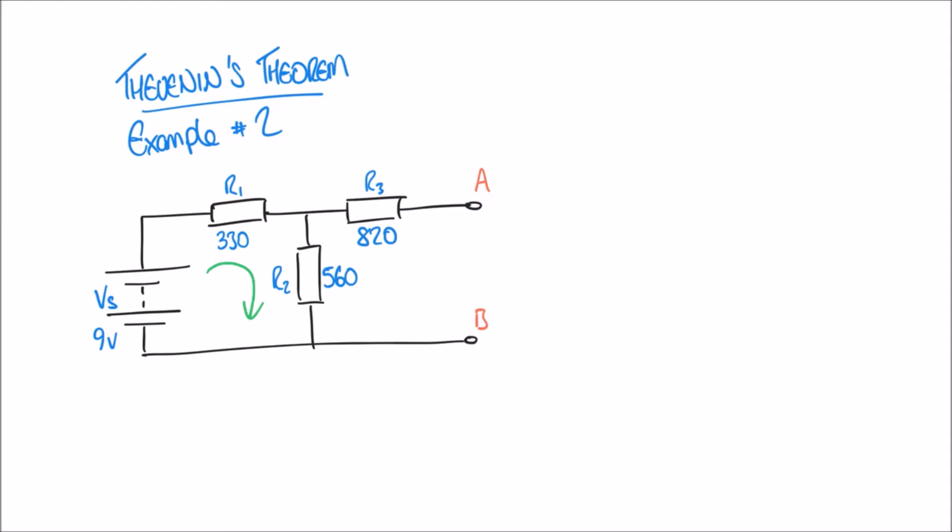R3 doesn't have a current travelling through it because it's open circuit. Terminal A isn't connected to anything at the moment, so current is not going to flow through R3. If current doesn't flow through R3, the voltage across R3 is going to be zero. So when setting up our formula for the voltage divider rule, we only need to consider R1 and R2.